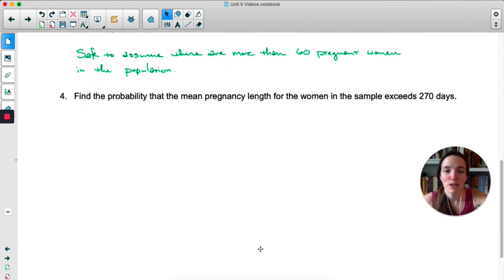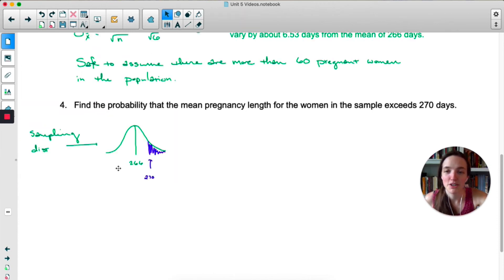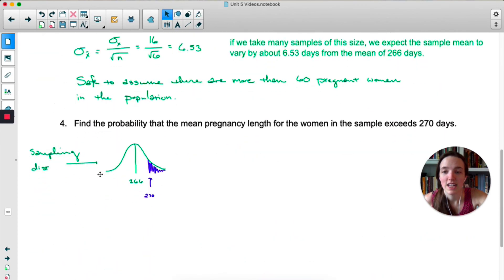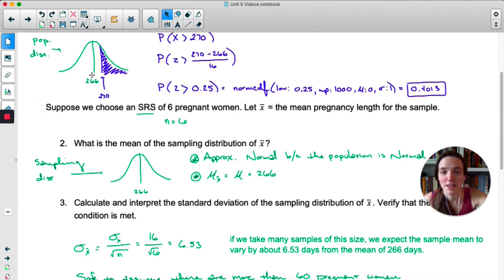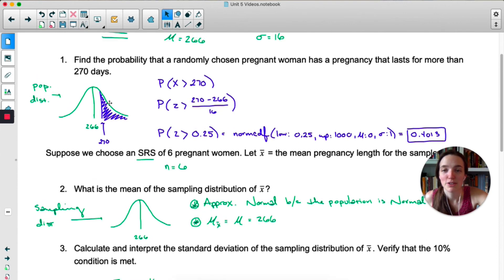Okay, find the probability that the mean pregnancy length for women in the sample exceeds 270 days. This time I don't have a population distribution, I have a sampling distribution. The mean is 266, so when I first do the sketch it looks exactly the same. But look at where I put 270. In the original, when I was looking at the population, the standard deviation was 16, 270 is not a full standard deviation above the mean.